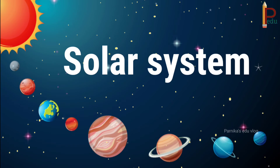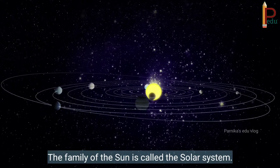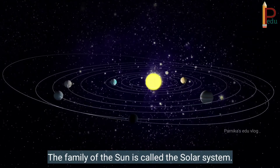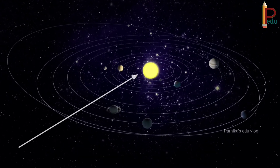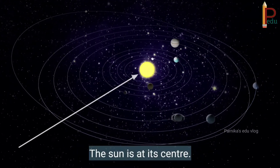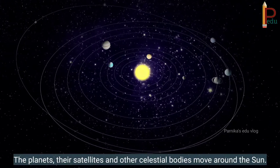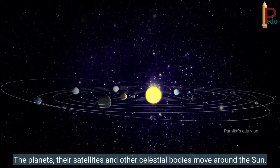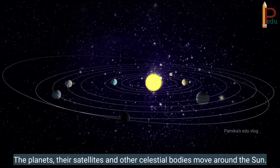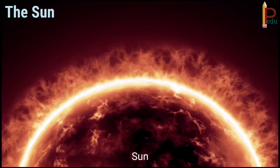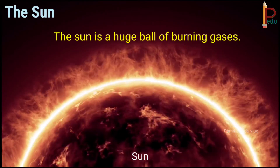Solar System. The family of the sun is called the solar system. Children, look at here. The sun is at its center. The planets, the satellites and the other celestial bodies move around the sun.